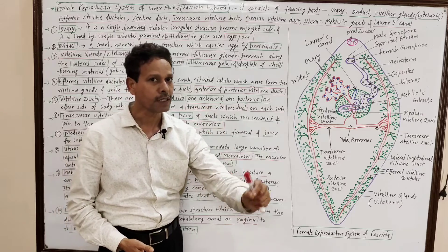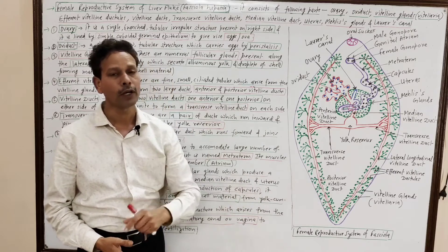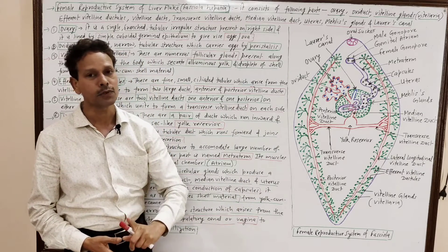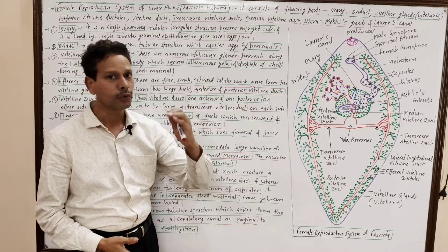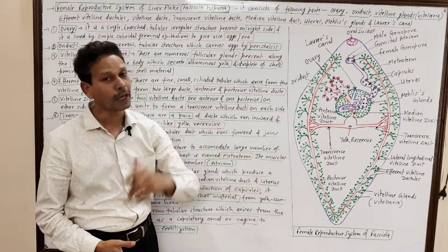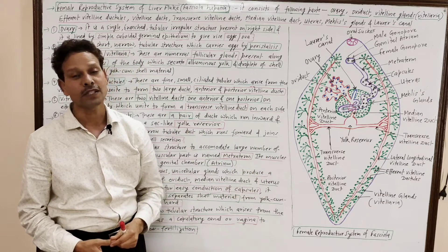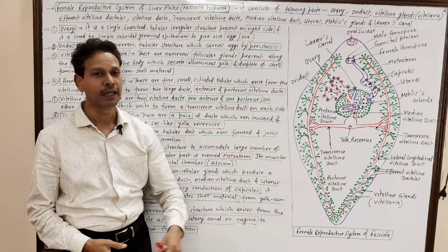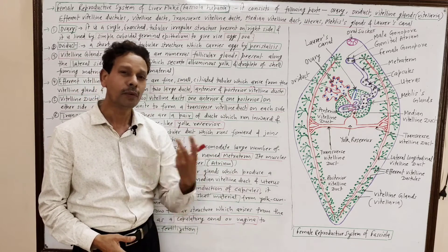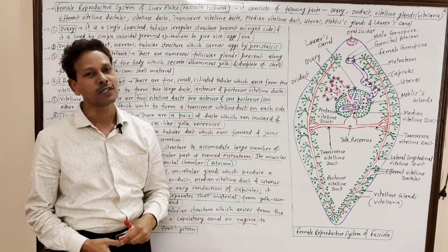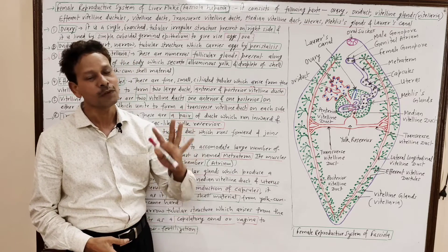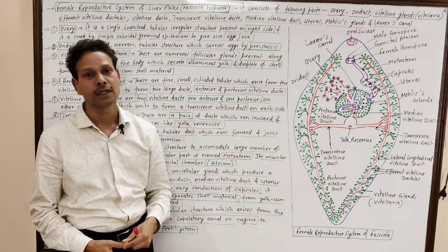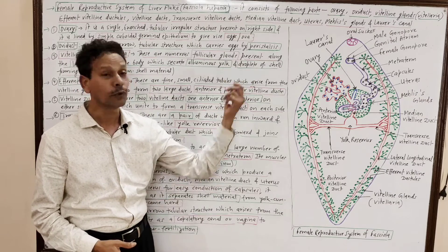Dear students, today we will discuss a very important topic for the final exam. B.Sc. students, note down. Today we will cover the female reproductive system of liver fluke, Fasciola hepatica. In our last lecture, we discussed the male reproductive system. As we know, the animal is hermaphrodite — monoecious — both sex organs are united.